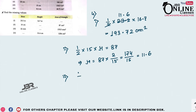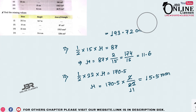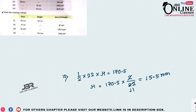Third one: ½ × base 22 × height h = 170.5, so h = 170.5 × 2 ÷ 22. Cancel 22 with 2 to get 11, so 170.5 ÷ 11 = 15.5 mm.